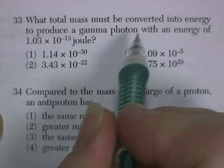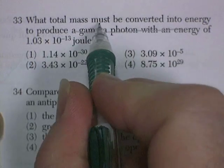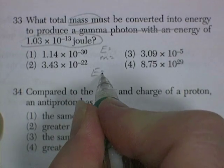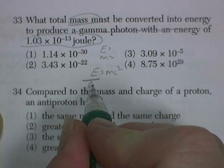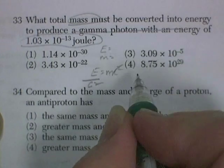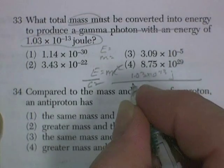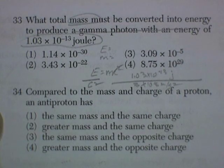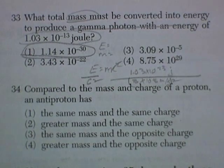33, what total mass must be converted into energy to produce a gamma photon with an energy? So, we don't care about any of this stuff. We just know that mass is converted into this much energy. So, we know energy, we know mass, and we know Einstein said that E equals mc squared. So, what total mass? We're solving for mass. So, E divided by c squared gives us the mass. So, that's 1.03 times 10 to the negative 13 joules, divided by 3 times 10 to the 8 meters per second squared. Don't forget to square it. Get your calculator out. And, I'm coming up with 1.14 times 10 to the negative 30.